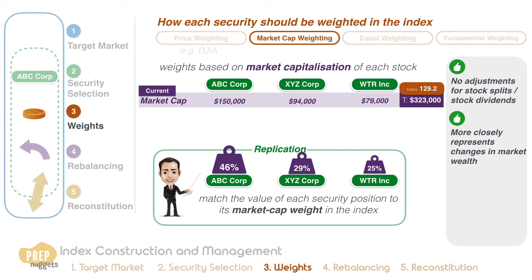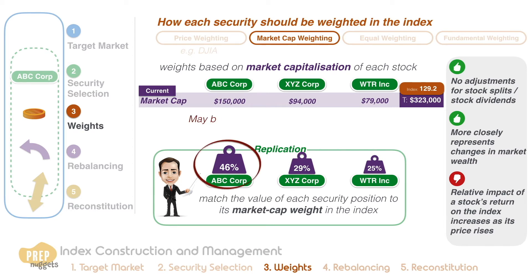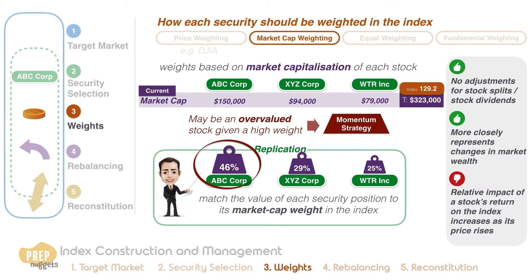This strategy, however, can have some adverse effects in that the relative impact of a stock's return on the index increases as its price rises and decreases as its price falls. This means that stocks that are possibly overvalued are given disproportionately high weights in the index. This is similar to following a momentum strategy under which the most successful stocks are given the greatest weights and poor performing stocks are underweighted.